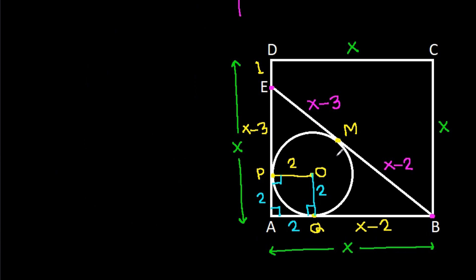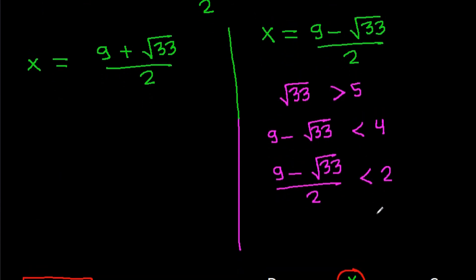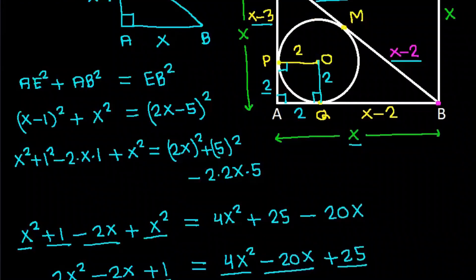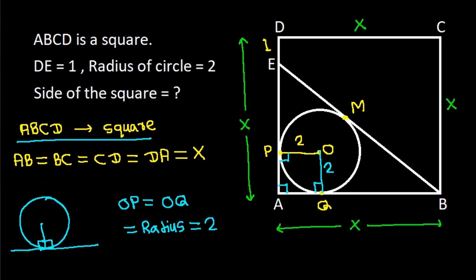From this figure, we can say that X should be greater than 2. Since (9 minus √33) divided by 2 is less than 2, that value is rejected. Therefore X equals (9 plus √33) divided by 2. So the side of the square is (9 plus √33) divided by 2.